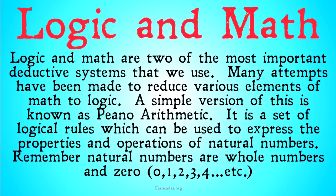Remember, natural numbers are whole numbers and zero. So they are zero, one, two, three, four, etc. There's an infinite number of natural numbers. Things that aren't natural numbers are things like negative five, one-half, or the square root of two.